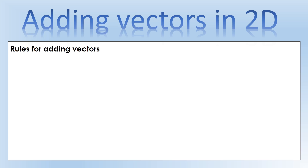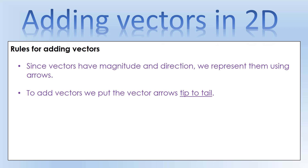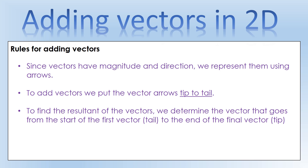Now let's look at how we actually add vectors. Since vectors have magnitude and direction we represent them using arrows - that's what you see on force diagrams. To add them, we put the vectors tip to tail. Then to find the resultant, we draw the vector that goes from the tail of the first vector to the tip of the final vector. So our rules are: represent vectors as arrows, put them tip to tail, and go from the start of the first to the end of the final one - that's our resultant.